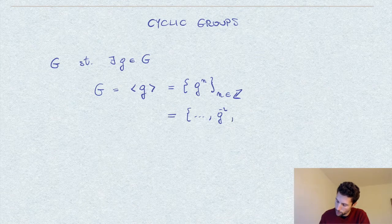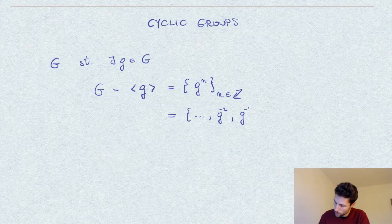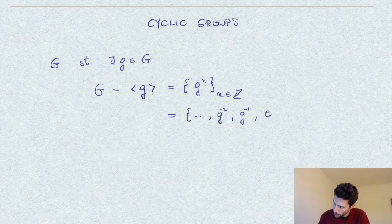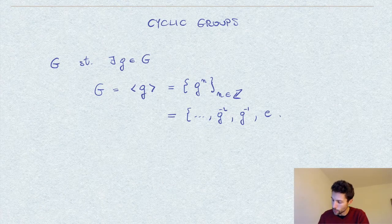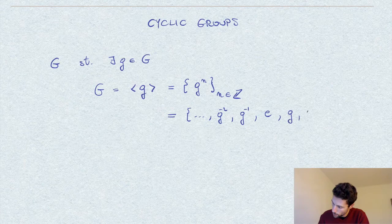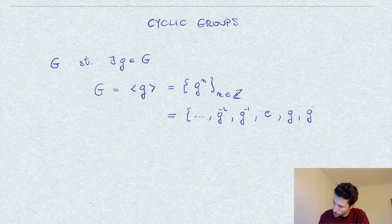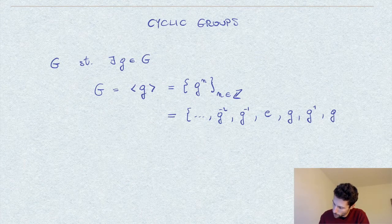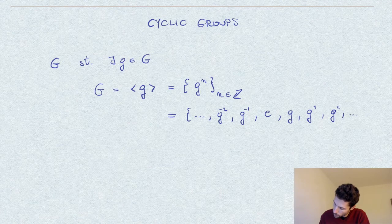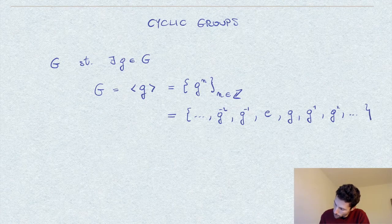G, all the negative powers of G, the inverse of course, the identity element, that is the zeroth power of g, and the positive powers, and so on.